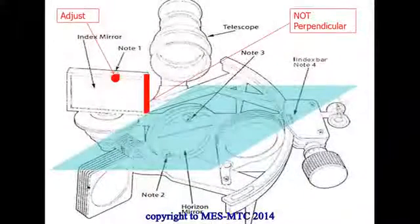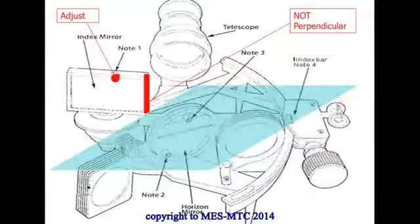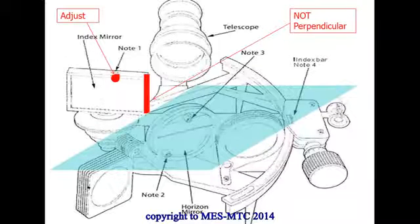I'd like to explain the error of perpendicularity. Error of perpendicularity is due to the index mirror — specifically, when the index mirror is not perpendicular to the plane of the sextant.